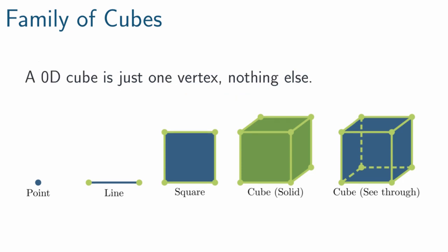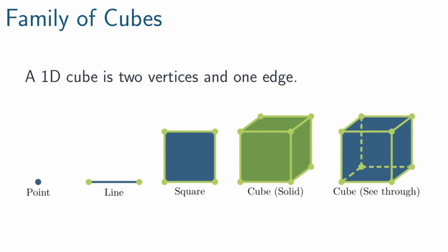Now a 0D cube, a point, is just one vertex and nothing else. A 1D cube, a line, is two vertices connected with one edge.